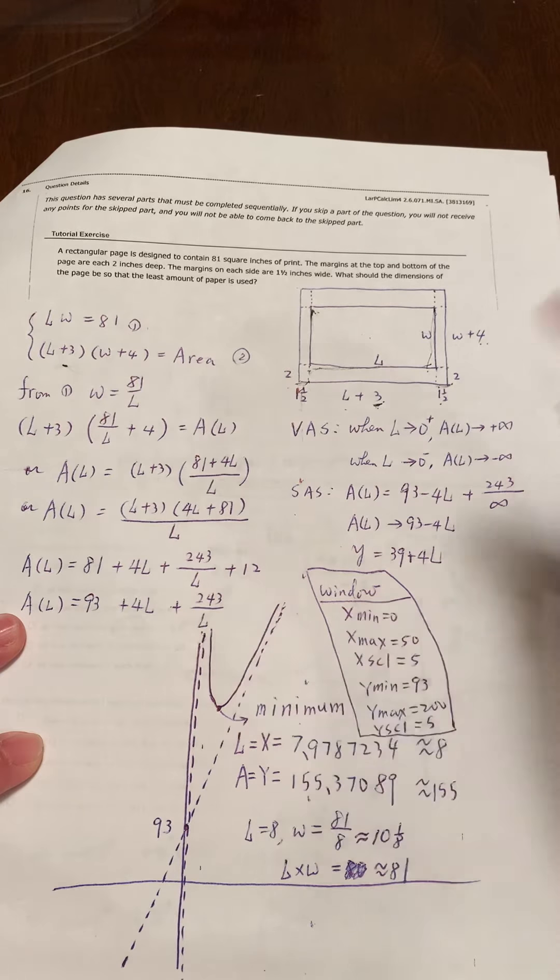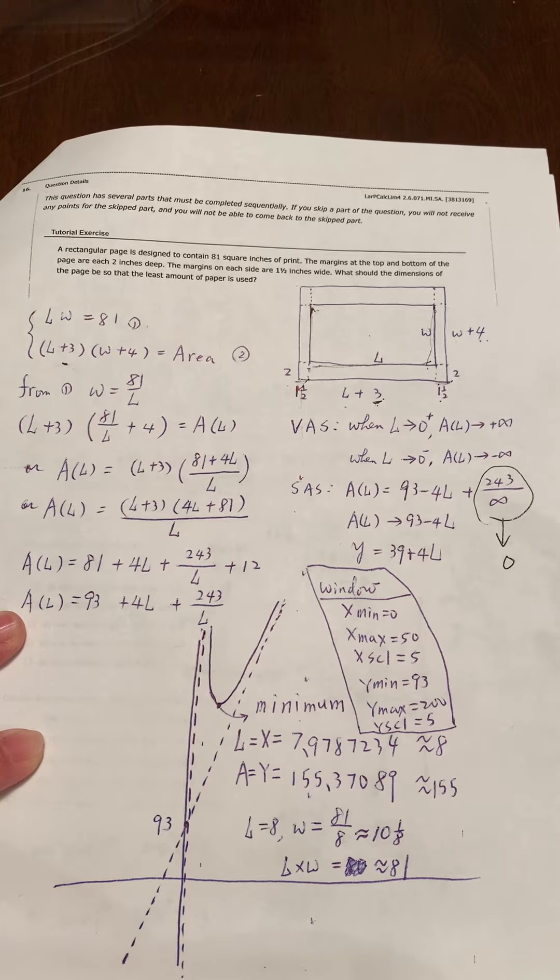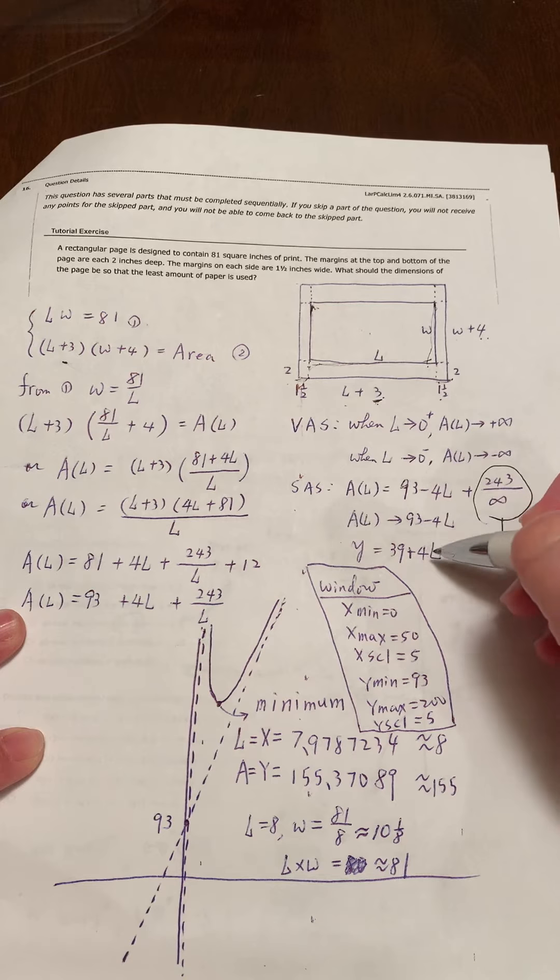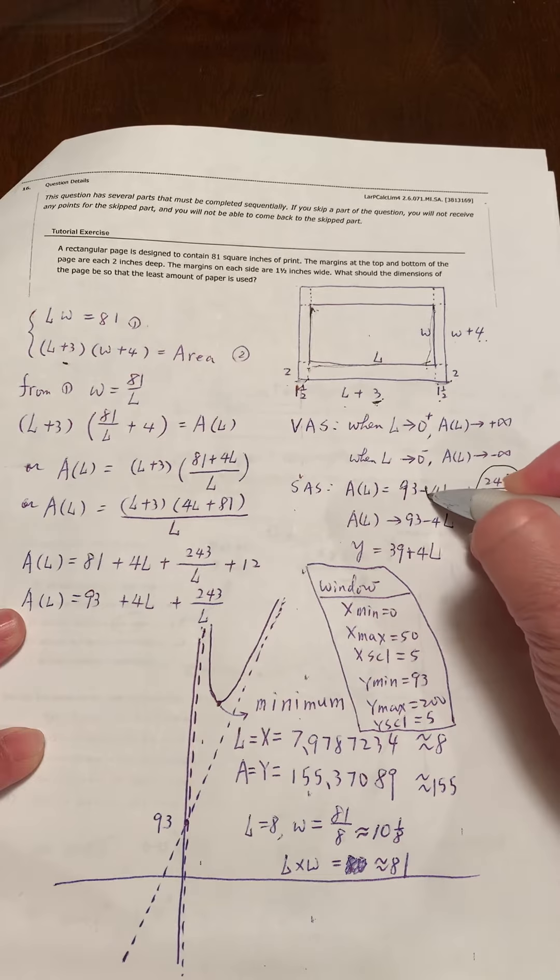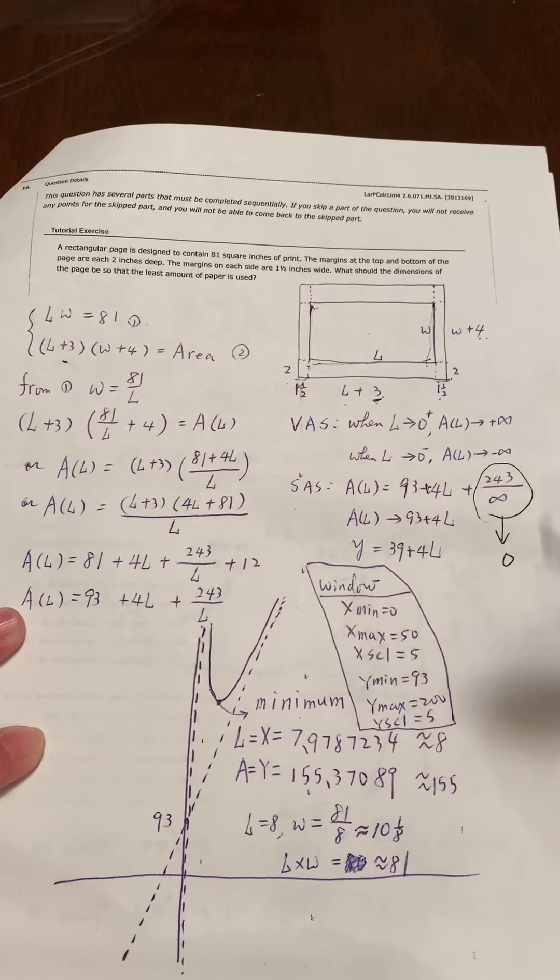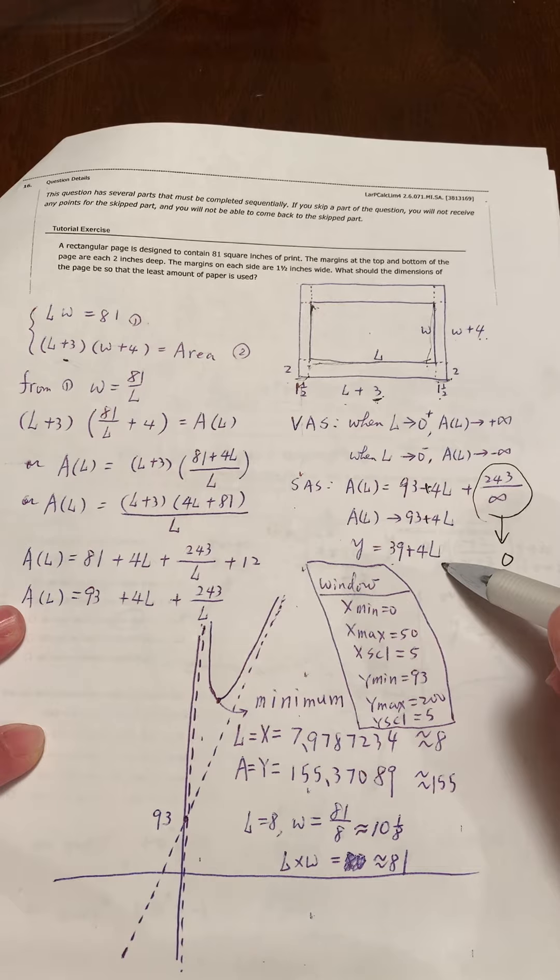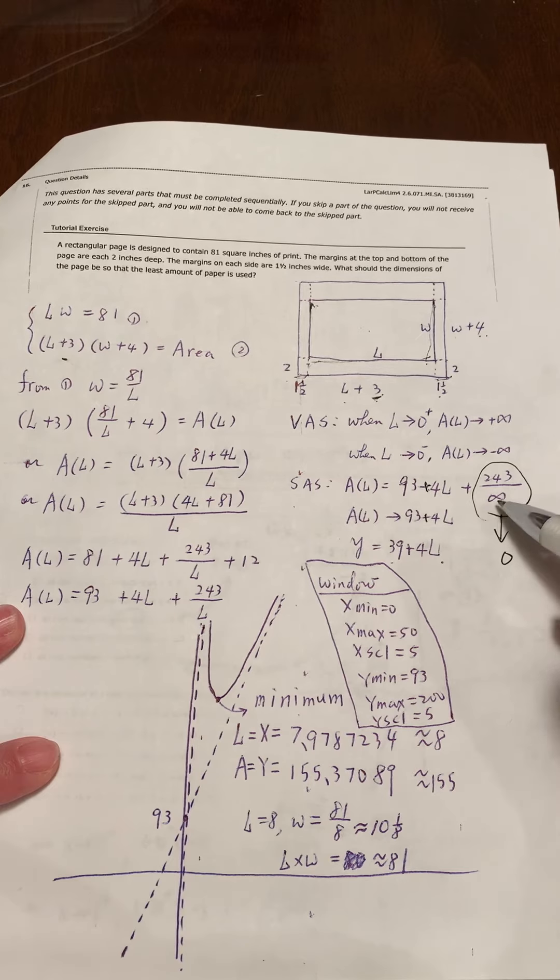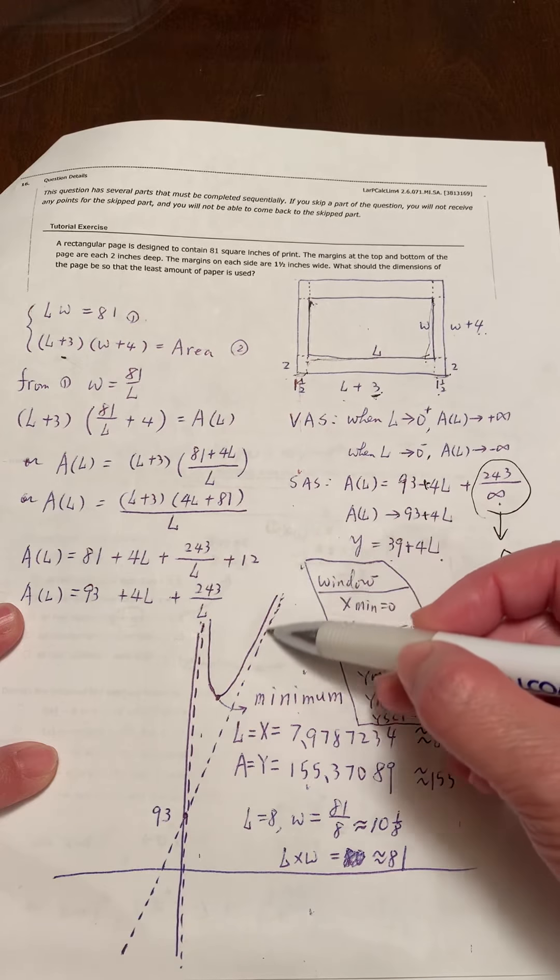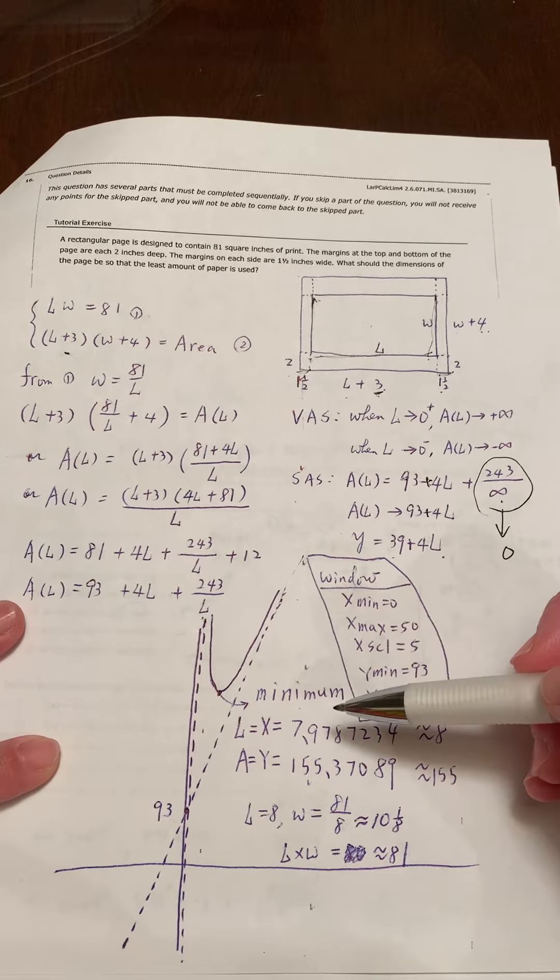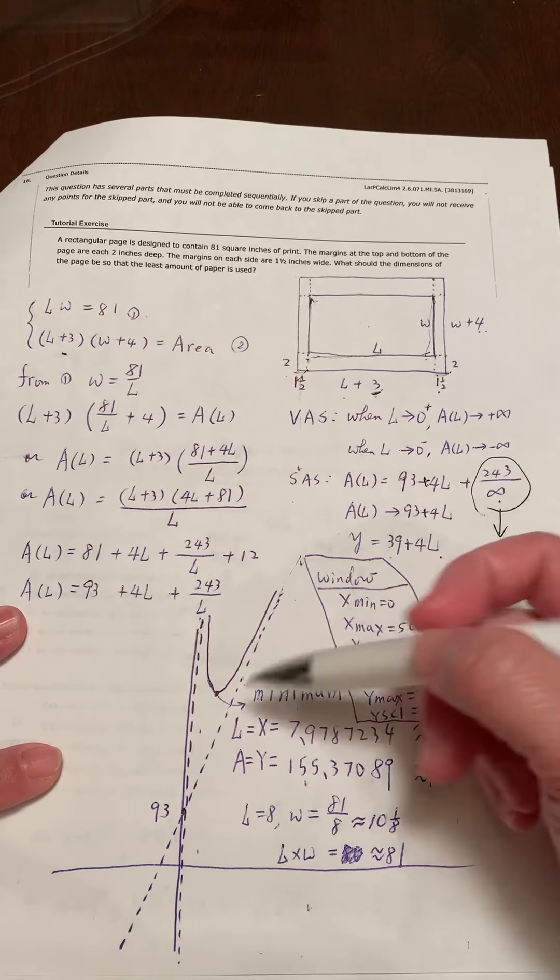Now again, if this error becomes very big, what happens? 243 divided by infinity, this part will go to zero. This part will go to zero, and then the rest is plus. So in this case, this is the slanted example when l becomes very very big. When l becomes very big, it will follow this.